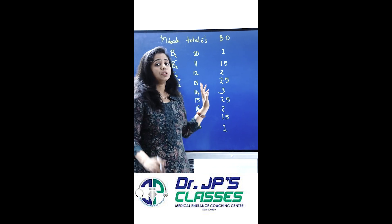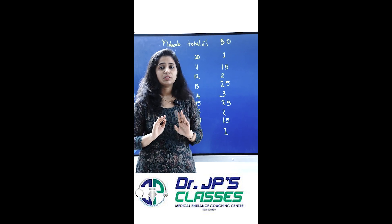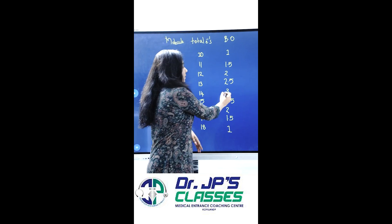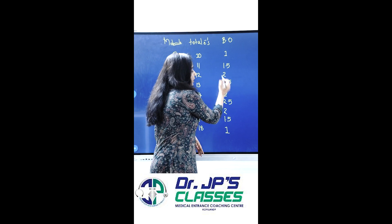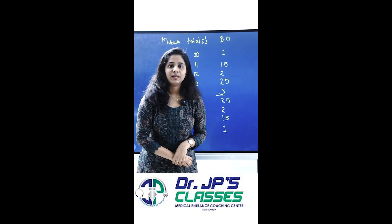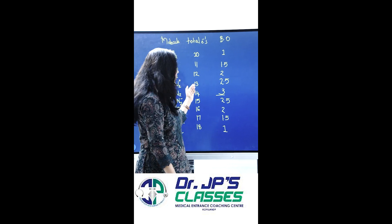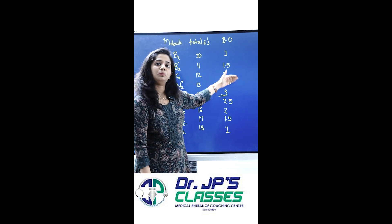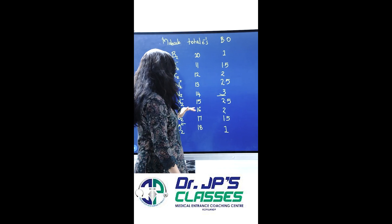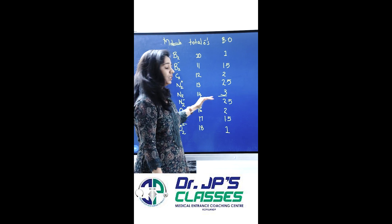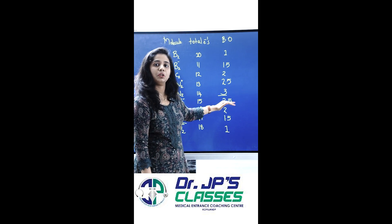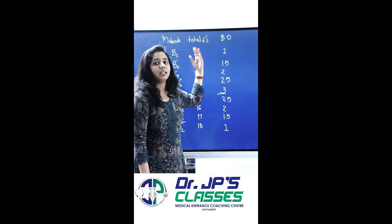How many electrons are in N2? 14 electrons. If you have a bond order of 3, it's 3. It's 13. It's 0.5. It's 2.5.